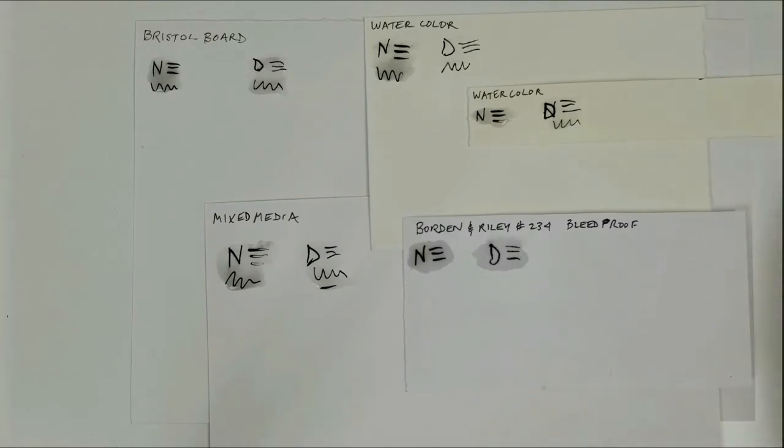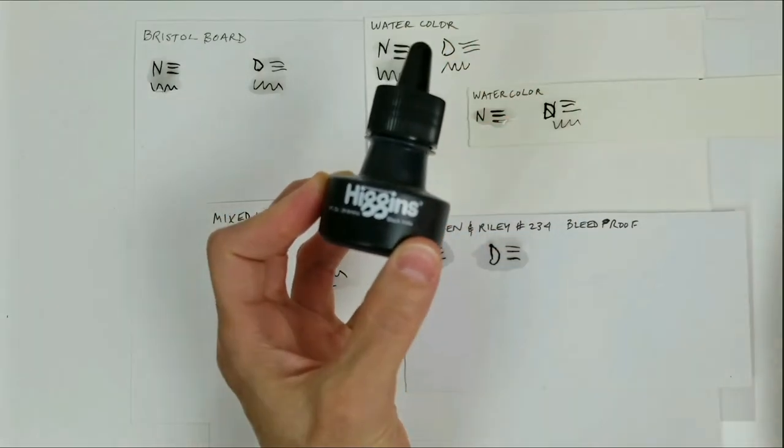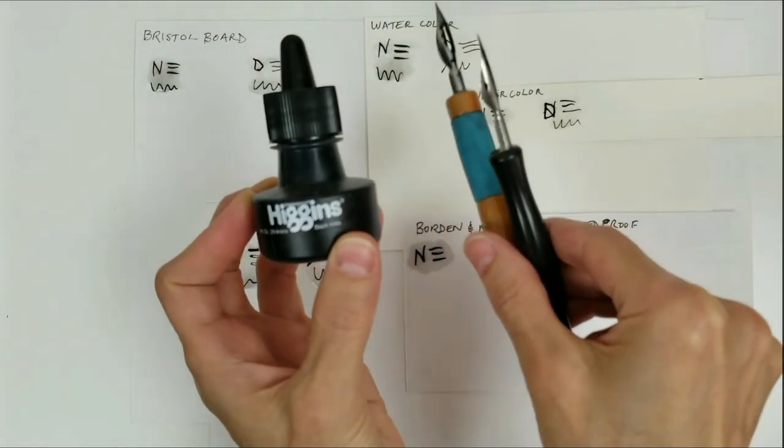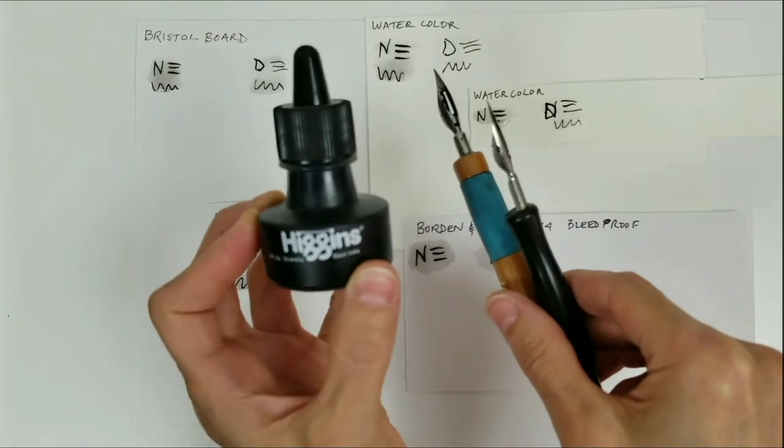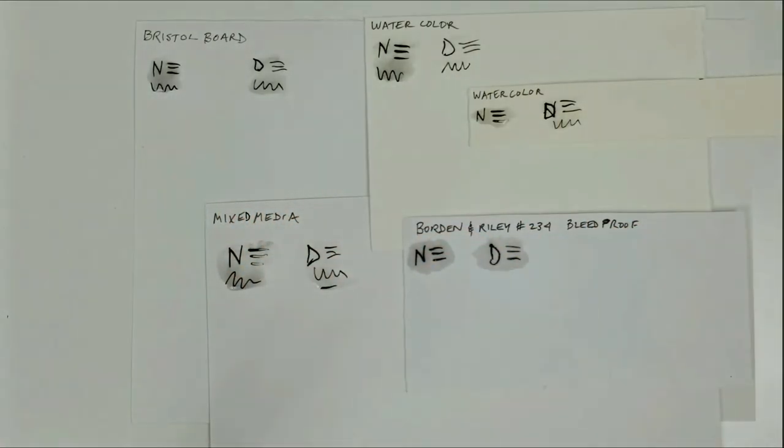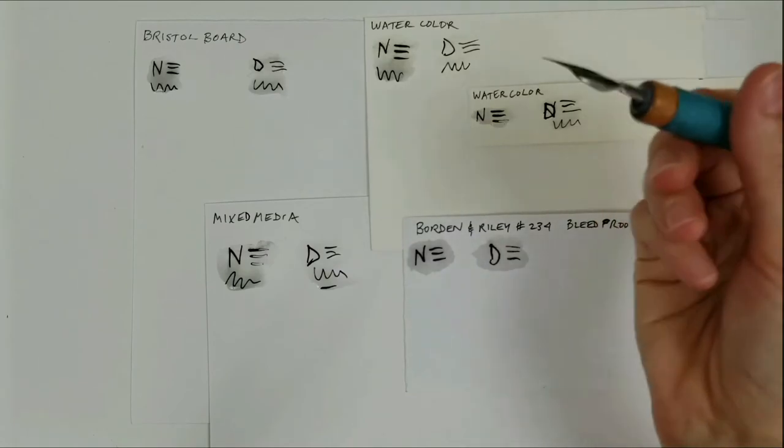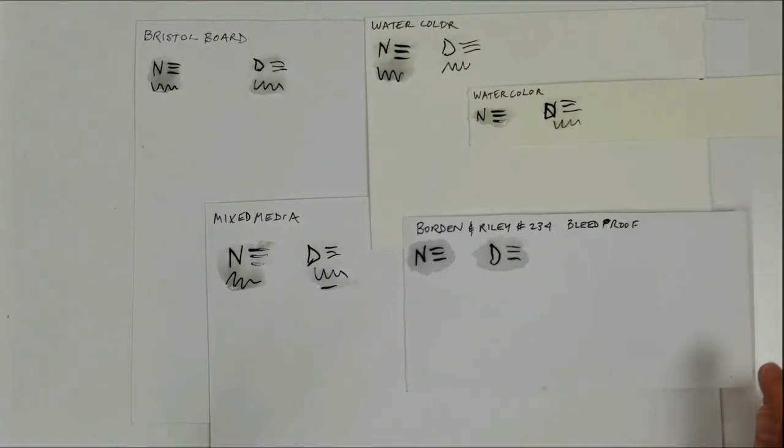Now of course, if you want to make sure that there's no bleeding at all, go ahead and use the Higgins ink, but only use it with dip pens like these. Don't put the Higgins into your fountain pen. And again, if you don't mind having to constantly be dipping your pen, your dip pen into ink, that's fine. Then you don't need to use a fountain pen.